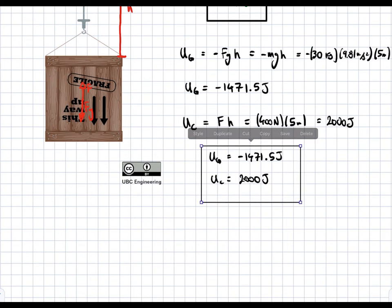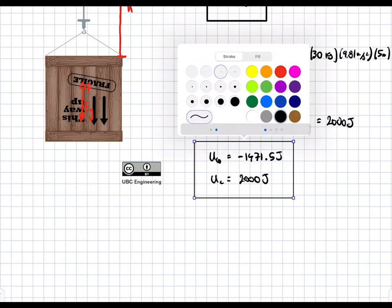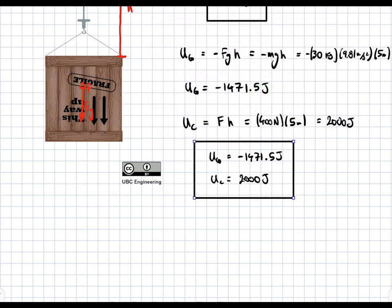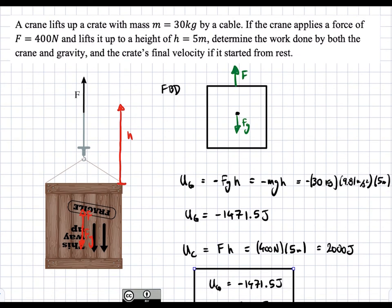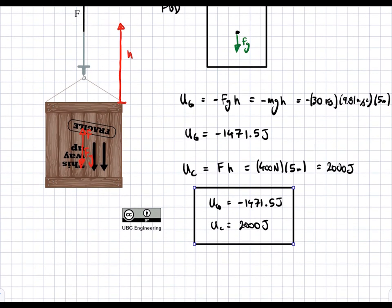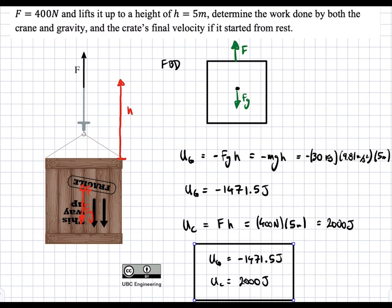The answer is Ug equals negative 1471.5 joules and U of the crane is going to be equal to 2000 joules. Next up, we're asked to find the final velocity of this crate, assuming that it's starting from zero. These two forces, the force due to gravity and F, they're not balanced. So we have a resulting acceleration.